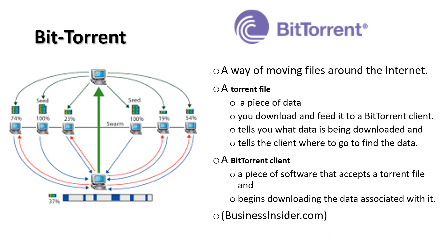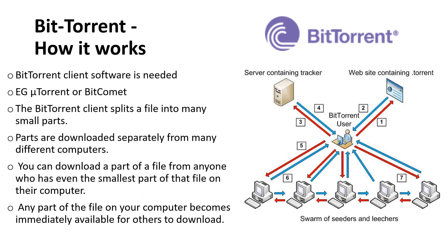A BitTorrent client is just software. The file tells you what data is being downloaded and tells the client where to go and find the data. A BitTorrent client accepts a torrent file and then begins to download the data associated with it. You need BitTorrent client software — examples are MicroTorrent or BitComet. The client splits a file into lots of small parts, and all those little parts are downloaded separately from different computers. You can download a part of a file from anyone who even has the smallest part on their computer, and any part of the file on your computer immediately becomes available for others to download.